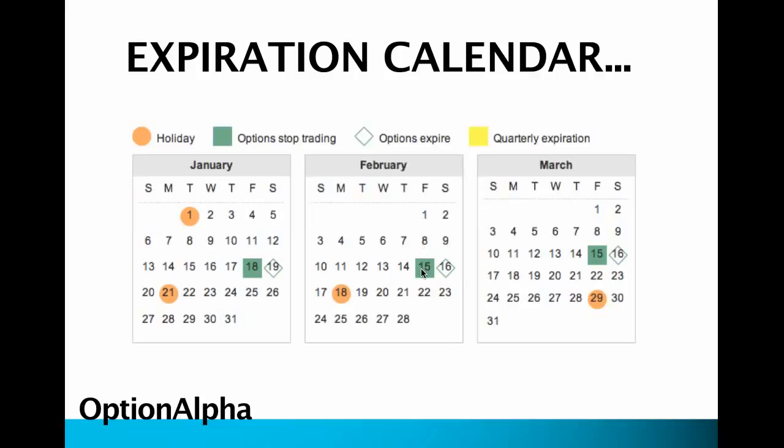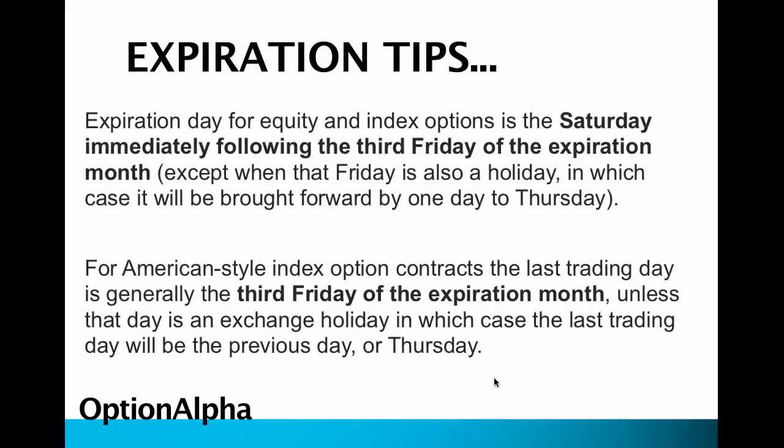So in February — one, two, three — there's the third Friday, and expiration is that Saturday. For American style index option contracts, the last trading day is generally the third Friday of the expiration month, unless that day is an exchange holiday, in which case the last trading day will be the previous day or Thursday. This is a really important one to watch out for — if Christmas or Thanksgiving happens to be on that third Friday, then it's actually going to move to the previous day. So just be aware of that and know when expiration is so you don't get caught on your heels.